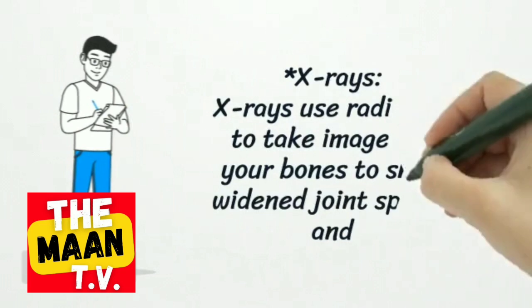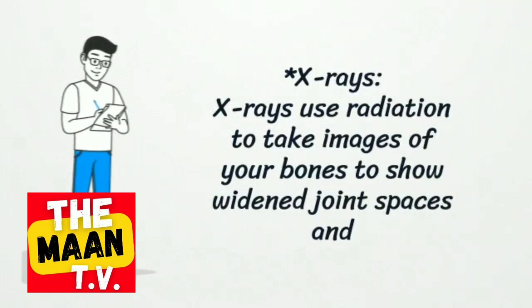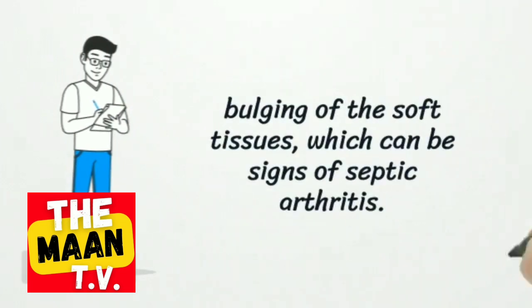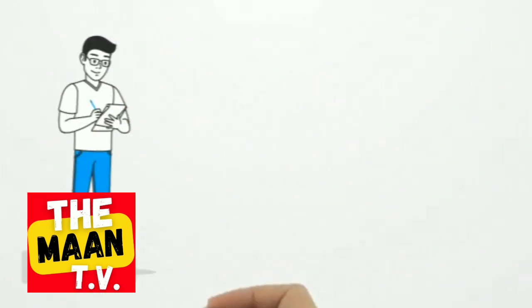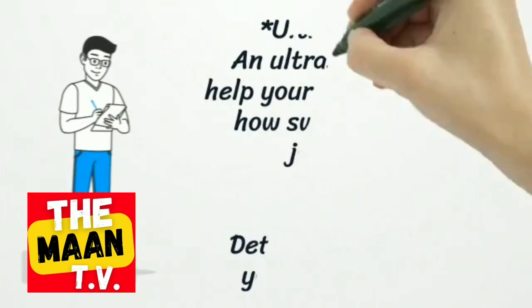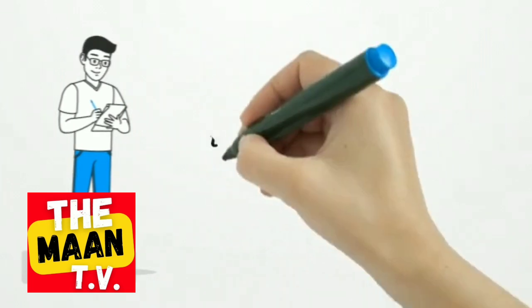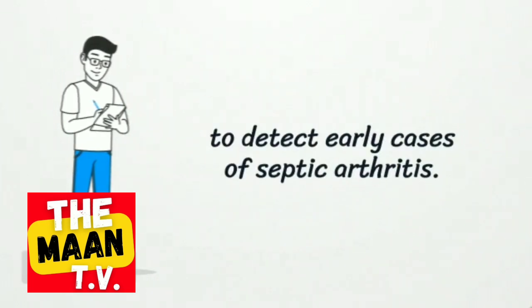X-rays use radiation to take images of your bones to show widened joint spaces and bulging of the soft tissues, which can be signs of septic arthritis. An ultrasound can help your provider see how swollen your joint is. MRI provides detailed images of your organs and bones to detect early cases of septic arthritis.